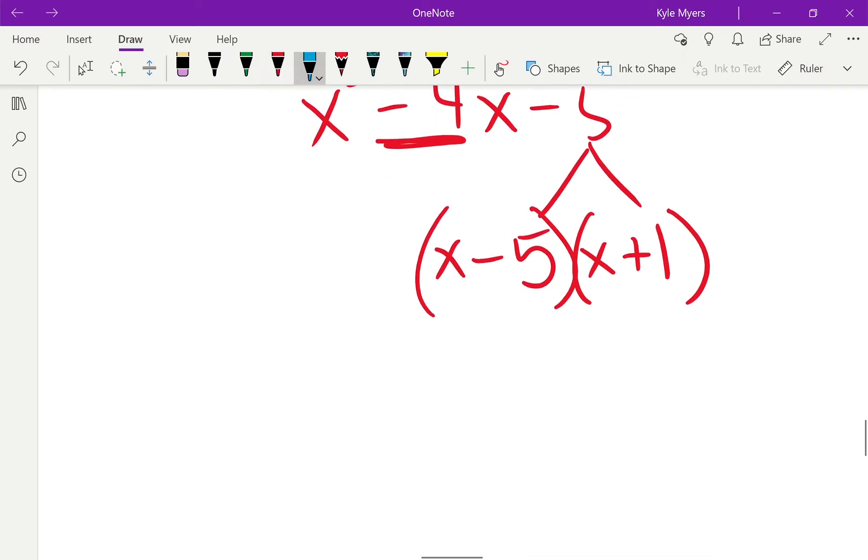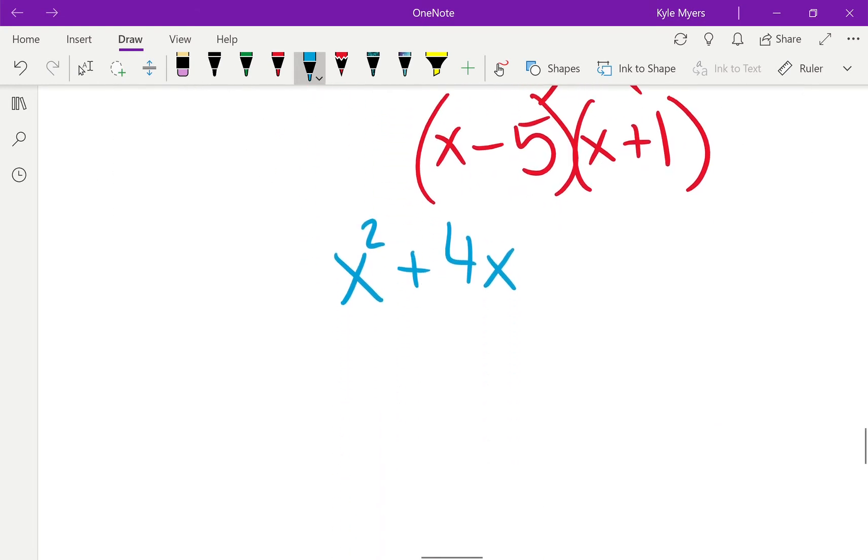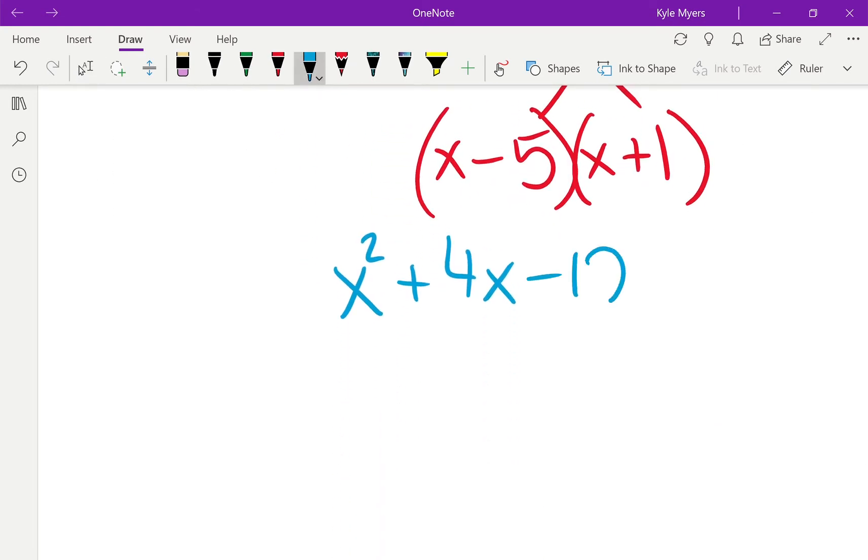And then for the last one for the day, we've got x² minus 4x. Actually, it's plus, I believe. Let me check. Yeah, plus 4x minus 12. There we go. So, plus 4x minus 12. So, there's actually a lot of things that multiply to give you 12.